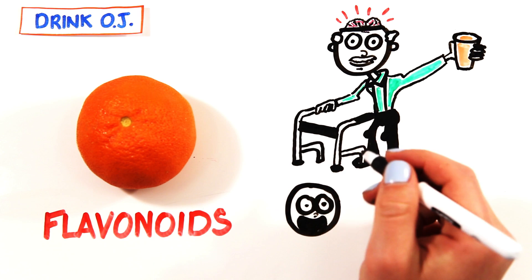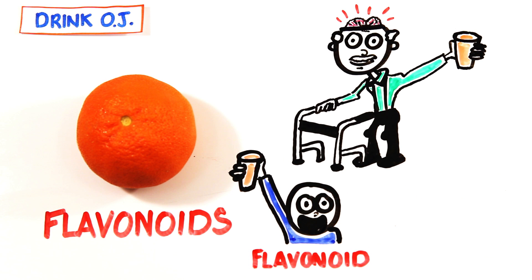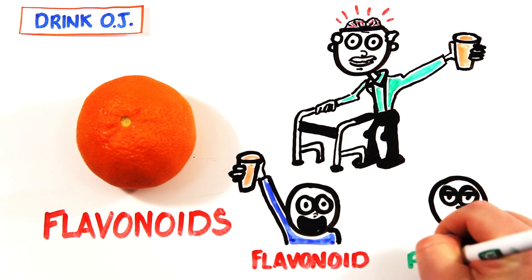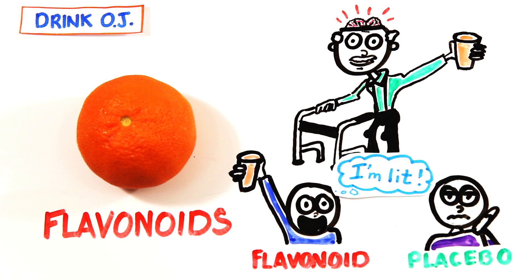One study found that participants who consumed flavonoid-rich orange juice had increased alertness and cognitive function compared to their counterparts who were fed a placebo.